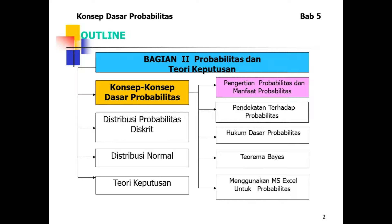Selanjutnya kita memasuki bagian 2: probabilitas dan teori keputusan. Kerangkanya: pertama, konsep-konsep dasar probabilitas; kedua, distribusi probabilitas; ketiga, distribusi normal; keempat, teori keputusan.